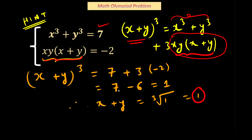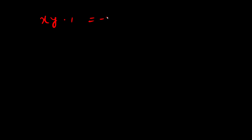Now if I plug in x + y = 1 into the second equation xy(x + y) = -2, I get xy × 1 = -2, and therefore xy = -2.